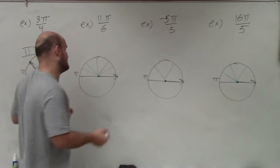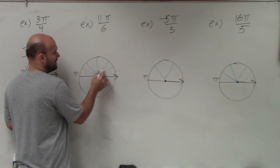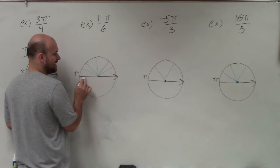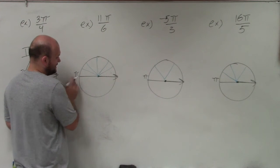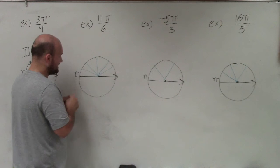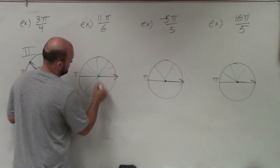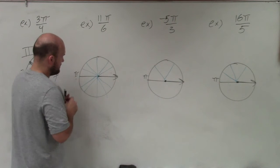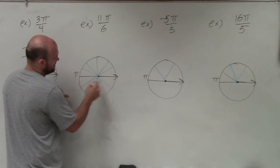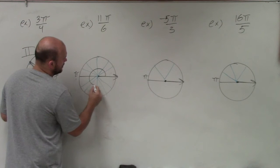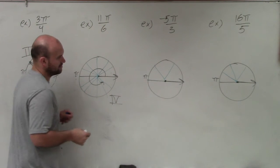Over here I have 11π/6. I break the half-circle into 6 sections, giving me 1π through 6π over 6, which equals pi — that takes me halfway around. Continuing: 7π, 8π, 9π, 10π, 11π over 6. Going all the way around brings me to the 4th quadrant.